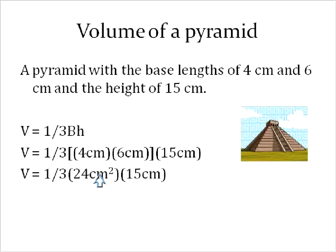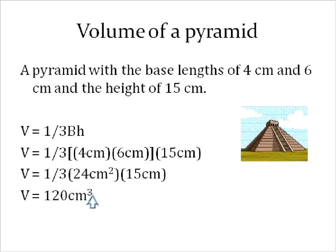So first I'll do what's inside the brackets: 4 times 6 centimeters times centimeters gives me 24 centimeters squared. Now I can just multiply everything out — 24 times 15 times 1 third — and that gives me a volume of 120 centimeters cubed, or cubic centimeters. That would be the volume of this pyramid.